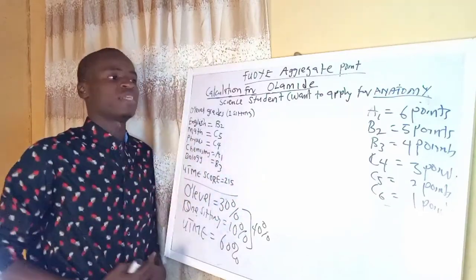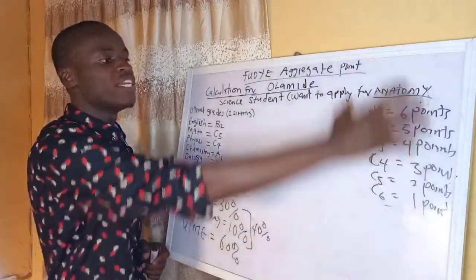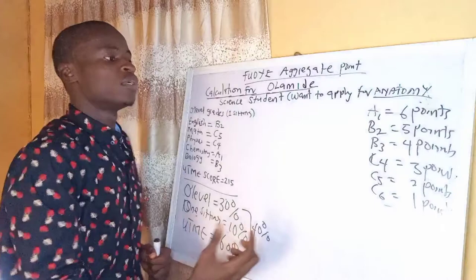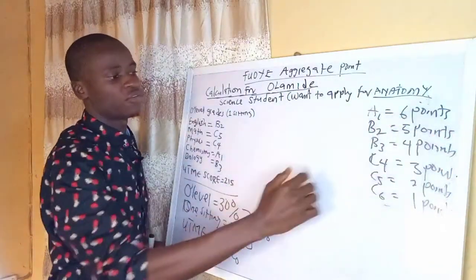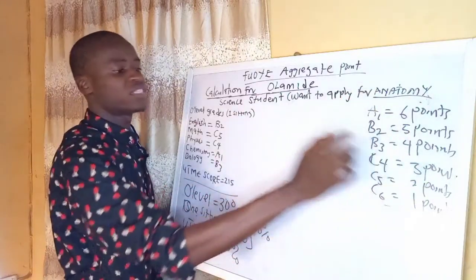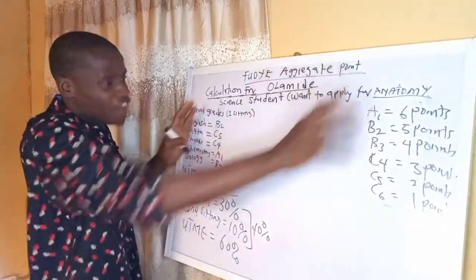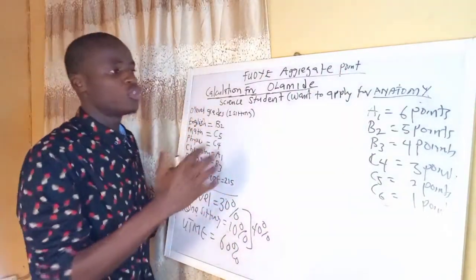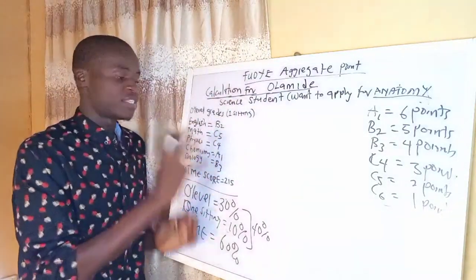Here are the points allocated for each grade in O-level. For A1 it's 6 points, B2 is 5 points, B3 is 4 points, C4 is 3 points, C5 is 2 points, and C6 is 1 point. Having known all this, now how do you go about the calculation for Olamide? I am using this result.